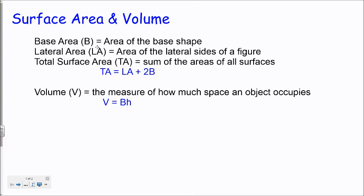Now the base shape is what determines what kind of prism we're talking about. So if the base is a triangle, we'll be talking about a triangular prism. If it's a square or a rectangle, we'll be talking about a rectangular prism.